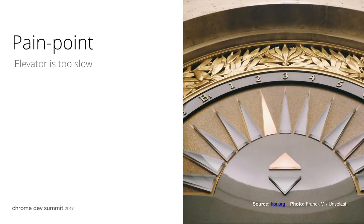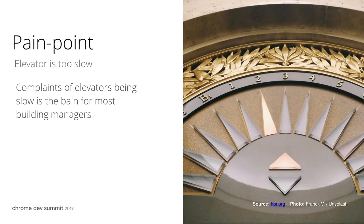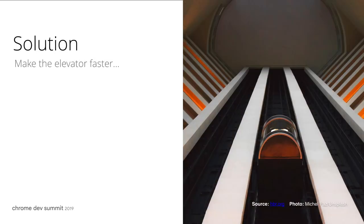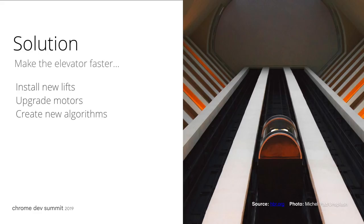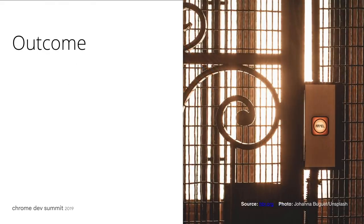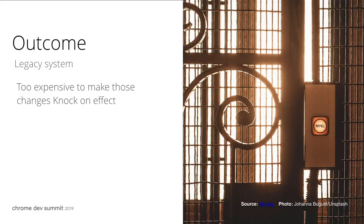People often complain to building managers that the elevator is running really slow — this is a big pain point. One potential solution is to make the elevator faster: you can install a new motor, upgrade the motor, rip out the elevator, try different algorithms. The problem with this, though, is it's quite an expensive thing to do, and for legacy systems, this is really difficult. This parable kind of describes the web — when new technologies or techniques come out, it's really difficult to rip out old code and replace it with new code.